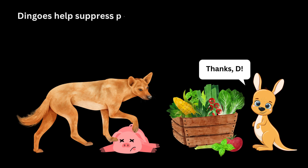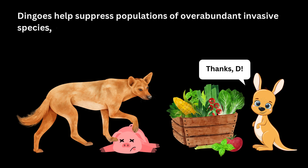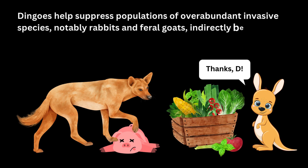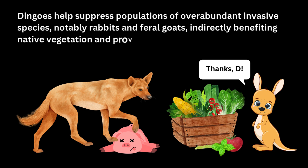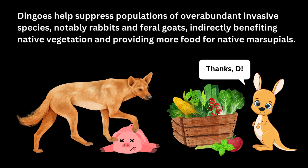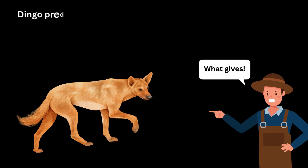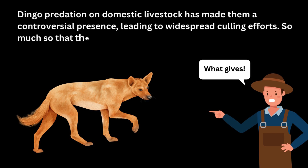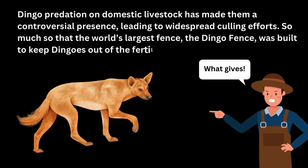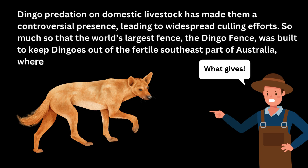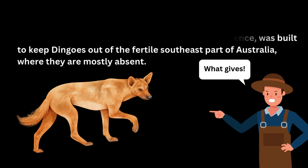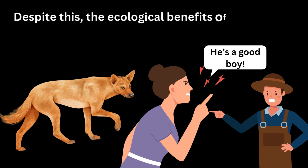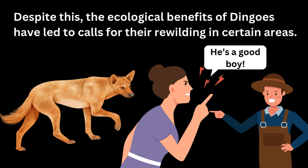Dingoes help suppress populations of overabundant invasive species, most notably rabbits and feral goats. In doing so, they indirectly benefit native vegetation and provide more food for indigenous herbivores. However, their predation on domestic livestock has made them a controversial presence, leading to widespread culling efforts — so much so that the world's largest fence, the dingo fence, was built to keep dingoes out of the fertile southeast part of Australia where they are now mostly absent. Despite this, the ecological benefits of dingoes have led to many calls for their rewilding in certain areas.